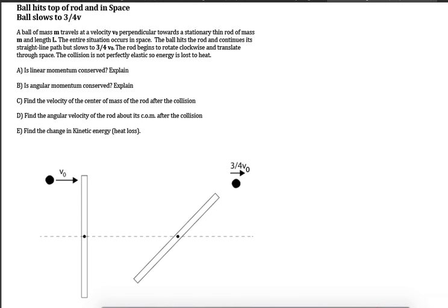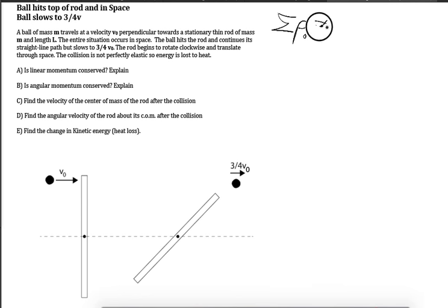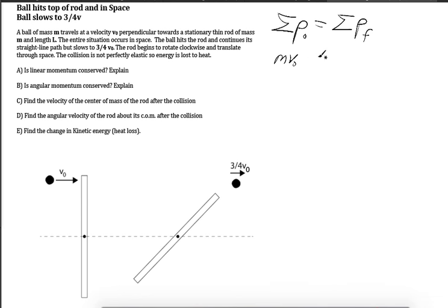Part C: find the velocity of the center of mass of the rod after the collision. The velocity of the center of mass is the linear translational velocity, so we use conservation of linear momentum. The sum of initial linear momentum equals the sum of final linear momentum. Initially, only the ball has momentum: mass m and velocity v₀.